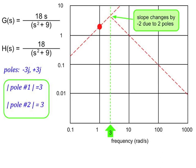H of s has two poles: plus 3j and minus 3j, both on the imaginary axis. The magnitude of each of these poles is 3. So what that means is that we'll adjust the slope at 3 radians per second. We'll adjust it by minus 1 for each of these two poles, so the slope will change by minus 2. We have our low frequency asymptote with a slope of plus 1, and the curve goes up until 3 radians per second, where we adjust the slope by minus 2. So plus 1 minus 2 yields a minus 1 slope.